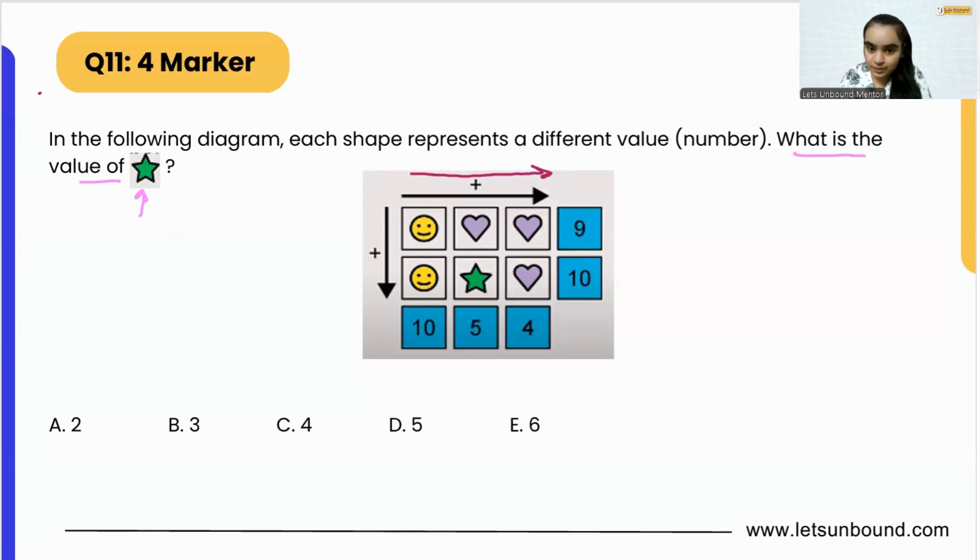If you go horizontally, then the sum has been written over here. And if you go vertically down, then the sum has been written over here, okay?